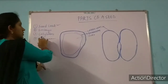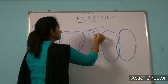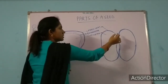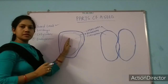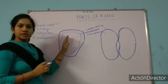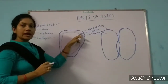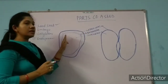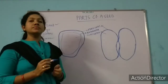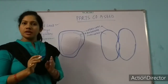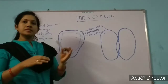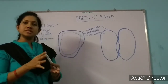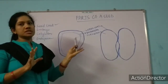Cotyledon is the first leaf of a seed. Even if it is not green in color, we still call it the first leaf of a seed, because it stores food for the seed. In monocot seed there is only a single cotyledon, as I am showing here.